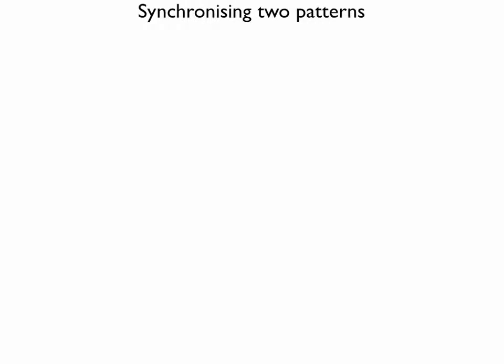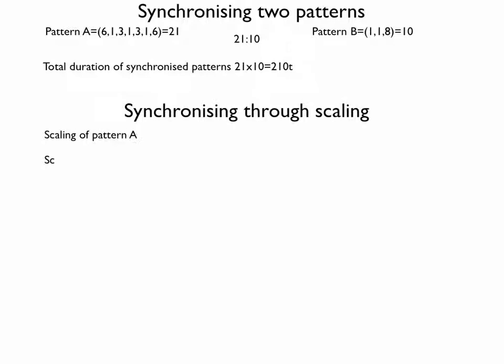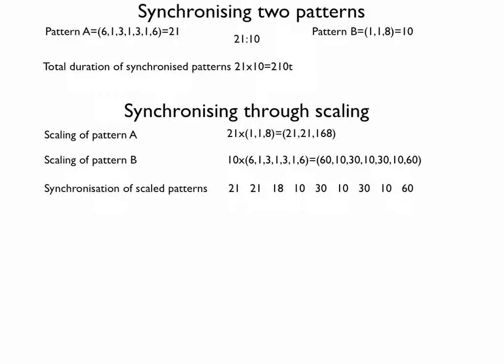On page 145, two completely different patterns are synchronized with one another. This is achieved first by equalizing their duration, then synchronizing the adjusted patterns. To equalize the patterns, the duration of each becomes a generator of a ratio. After scaling, the total of each new pattern will be greatly extended and the total duration of both patterns will be 21×10 or 210 time units. Now the two patterns can be synchronized to create a new resultant.